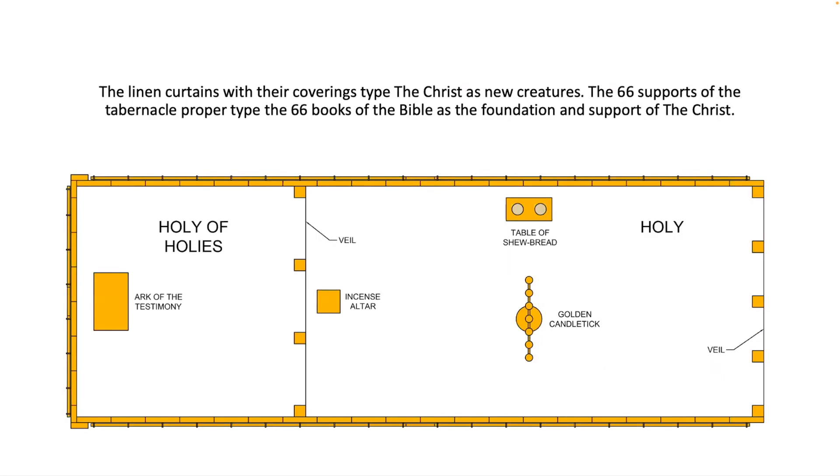The linen curtains with their coverings type the Christ as new creatures. Sixty-six supports of the tabernacle proper type the sixty-six books of the Bible as the foundation and support of the Christ.